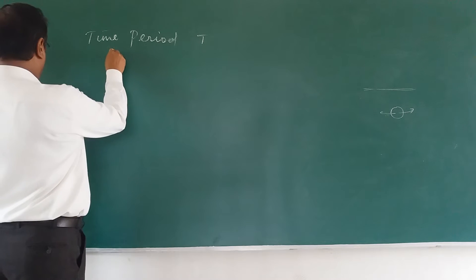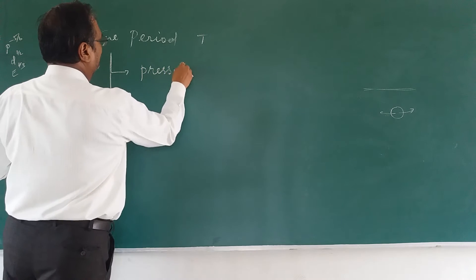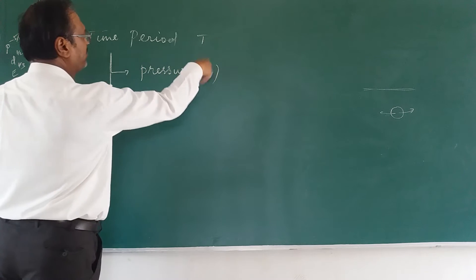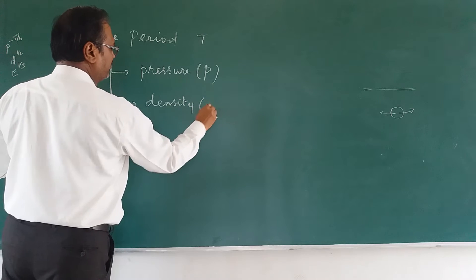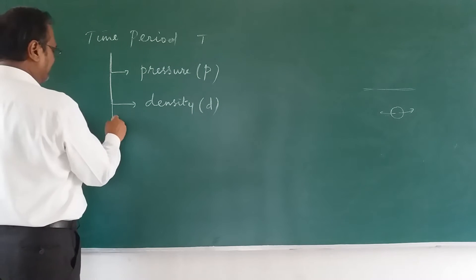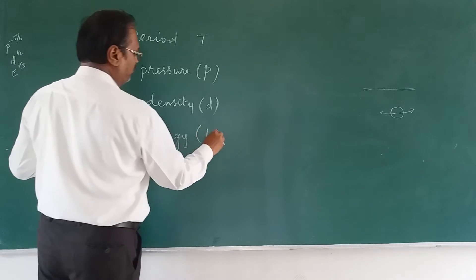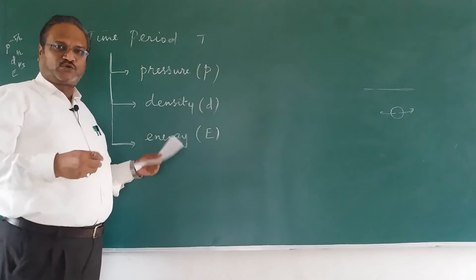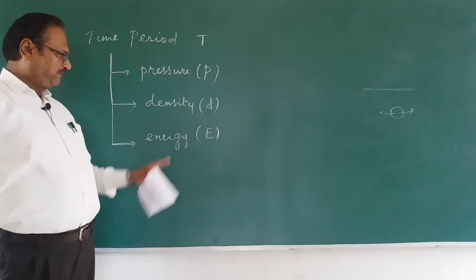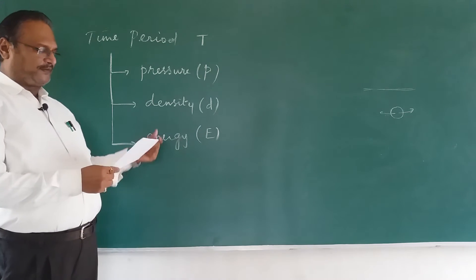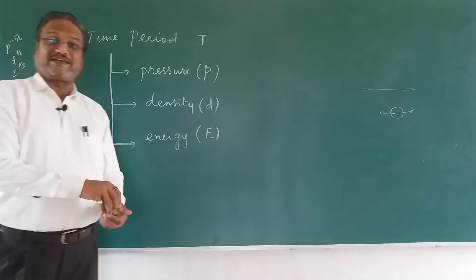The time period T depends on: pressure (symbol small p), density (symbol row or D), and energy due to the explosion (symbol capital E). We need to derive a relationship between the time period of oscillation and the pressure, density, and energy of the explosion. Let me do this problem step by step.